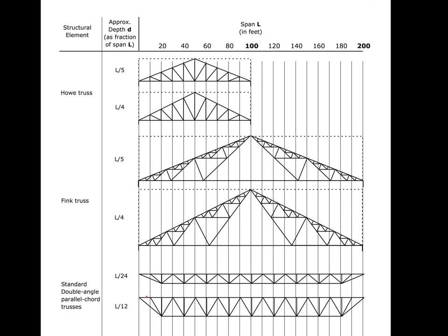Here are some examples of simple span trusses. On the top we have a Howe truss, which spans up to about a hundred feet. Its problem is that the web members start to get too long at very long spans, so we need to modify that geometry.